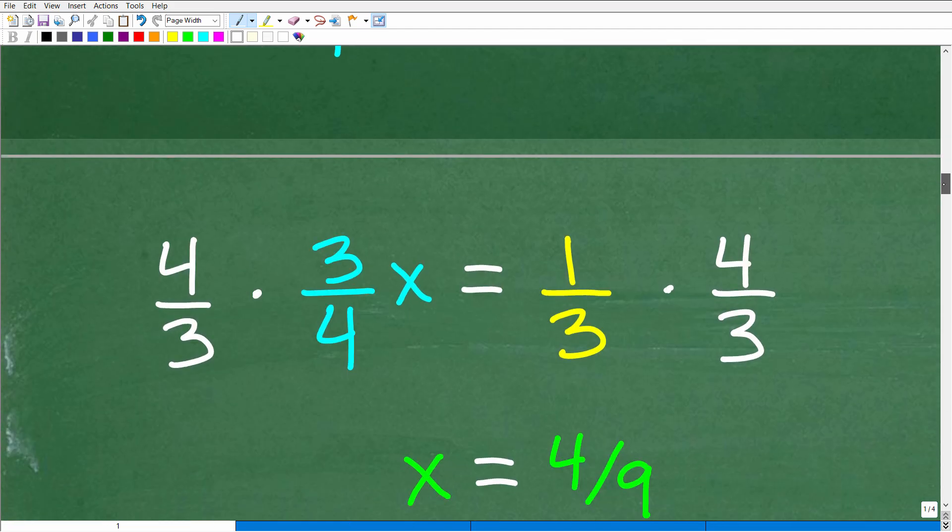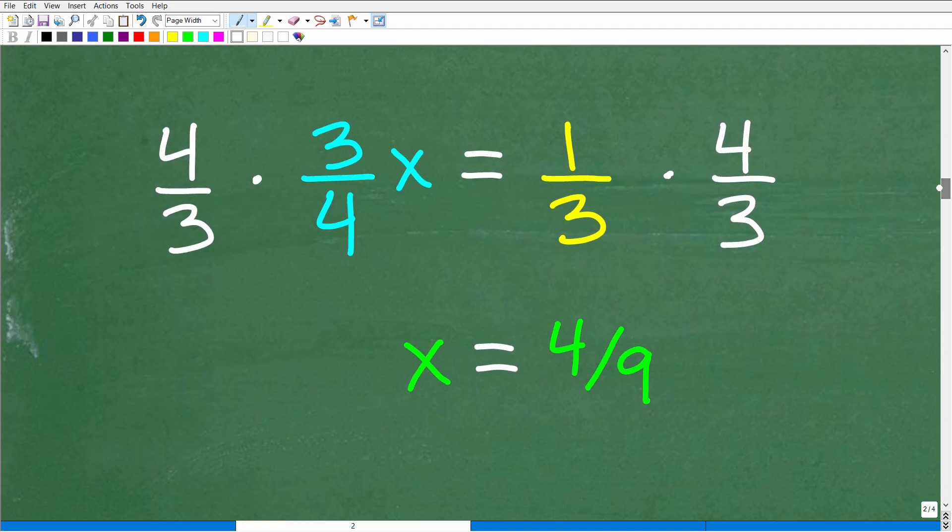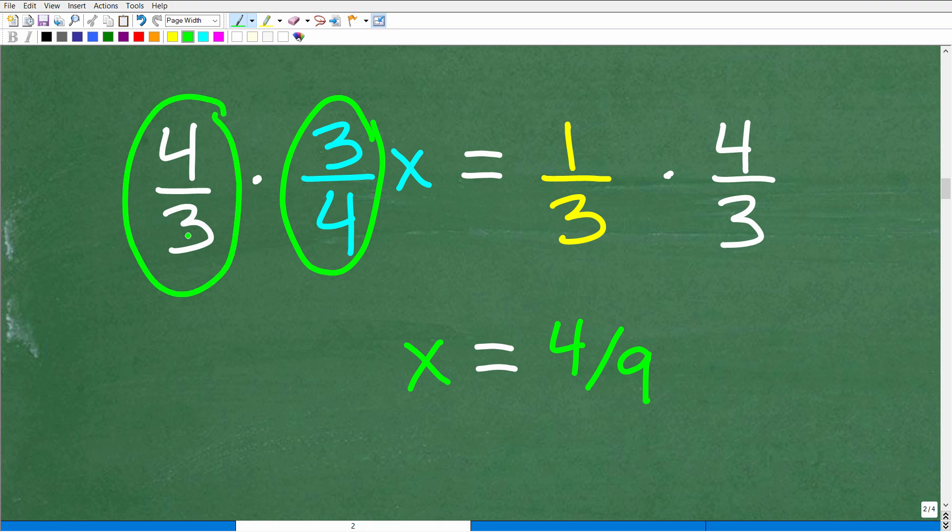All right, let's go ahead and do that right now. The easiest way to solve this equation is to flip this fraction right here. This is what we call a coefficient. This is three fourths. Let's just flip it upside down. That's four thirds and we'll multiply both sides of the equation by four thirds. Now why did I flip this upside down? Well, because when I multiply four thirds times three fourths, I'm going to get one.